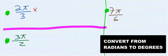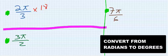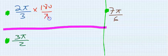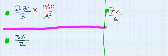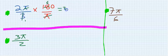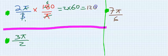Let's solve 2π over 3 converted to degrees. Just multiply by 180 over π. π cancels with π, 3 here is 1, 3 here is 6, and we have 2 multiplied by 60, and our answer is 120 degrees.